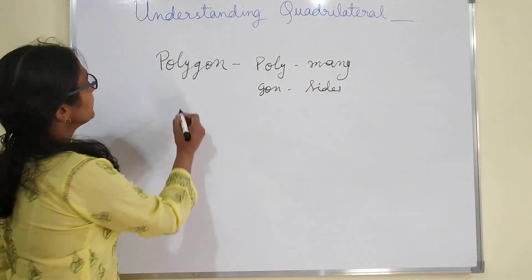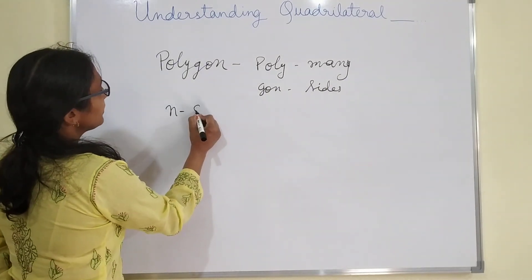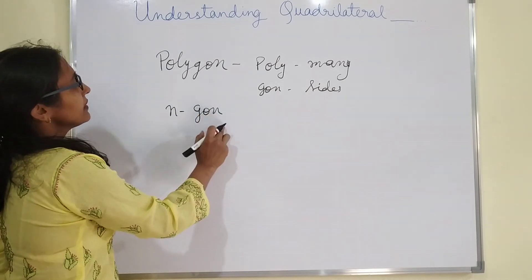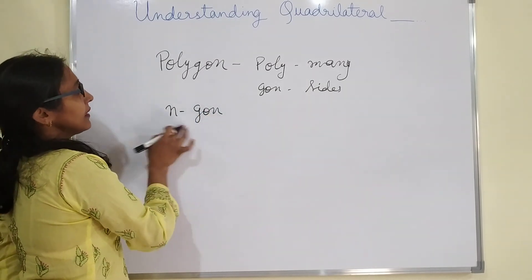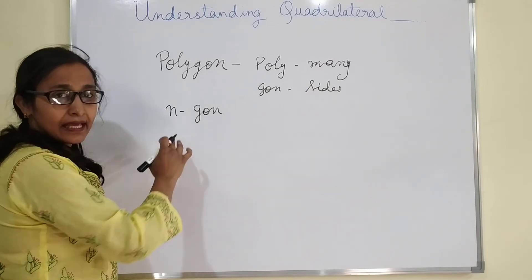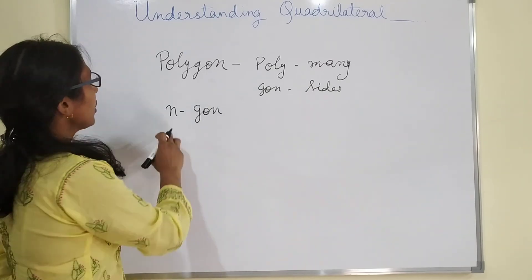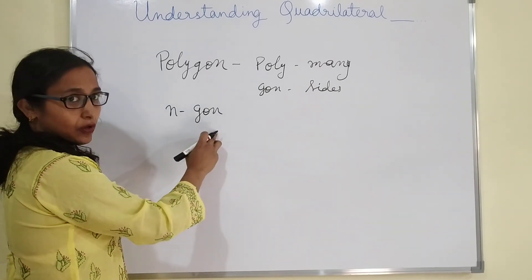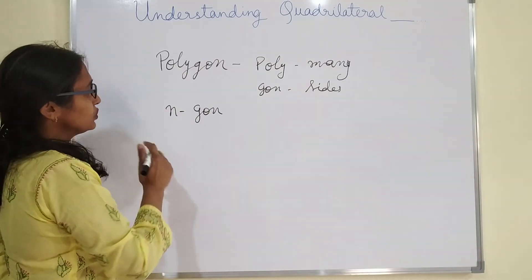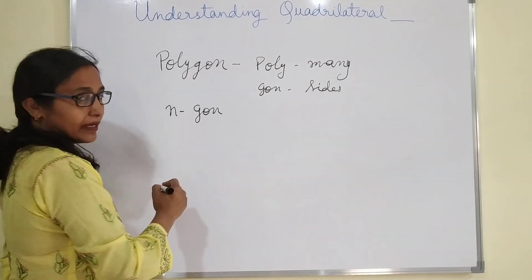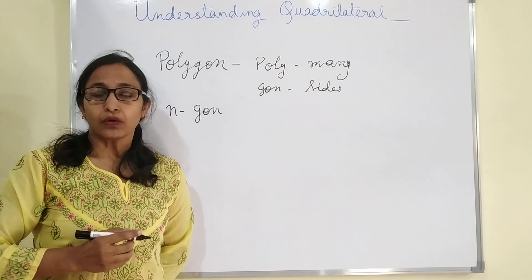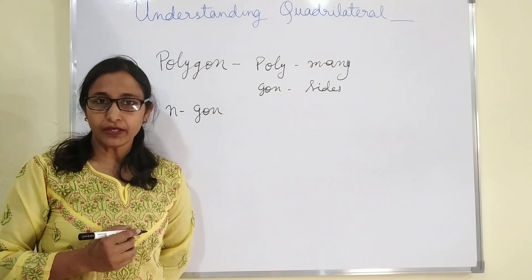Now, the next term is n-gon. N-gon means any figure which is having n sides is called an n-gon. On the basis of these two terms, a triangle is also a polygon, and a quadrilateral is also a polygon.